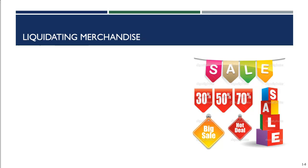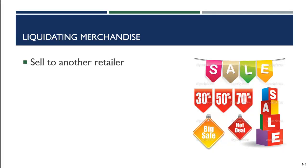Even with planning, some merchandise just won't move. Retailers have six methods to get merchandise out of the store. The first is to sell it to another retailer — if merchandise isn't selling in your location even after clearance, you might take it to TJ Maxx, Marshalls, Home Goods, or similar stores. Generally, retailers only recoup about 10% of the cost of the merchandise this way, but it's still better than losing everything.